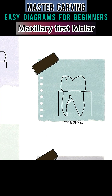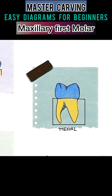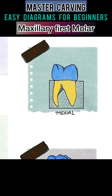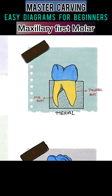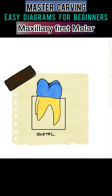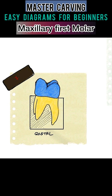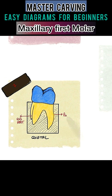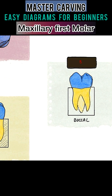From the mesial aspect, we'll get this outline, mark it, and remove the extra wax. This is the palatal root and this is the mesiobuccal root. From the distal aspect, we'll mark the outline and see the distobuccal root and the palatal root.